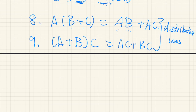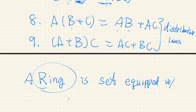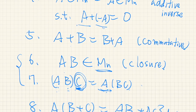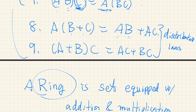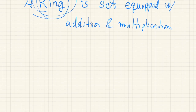Indeed, there is a name for such a system — it is called a ring. A ring is a set endowed with addition and multiplication that satisfies all these properties from one to nine. So M_n with matrix addition and multiplication is a ring — not a field, but a ring.